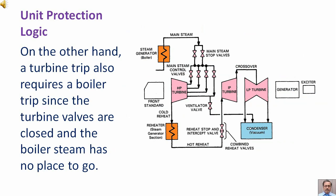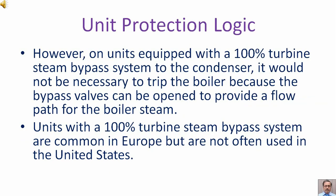On the other hand, a turbine trip also requires a boiler trip, since the turbine valves are closed and the boiler steam has no place to go. However, on units equipped with a 100% turbine steam bypass system to the condenser, it would not be necessary to trip the boiler, because the bypass valves can be opened to provide a flow path for the boiler steam. Units with a 100% turbine steam bypass system are common in Europe but are not often used in the United States.